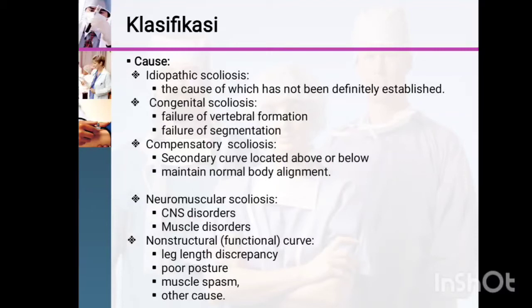Non-structural or functional scoliosis can be caused by leg length discrepancy, where one leg is longer than the other, causing the posture to tilt and the back to compensate with an abnormal sideways curve. It can also result from poor posture, slightly unbalanced sideways, muscle spasm, or other causes.